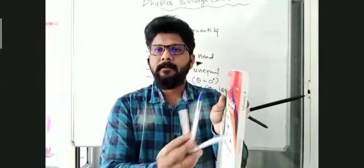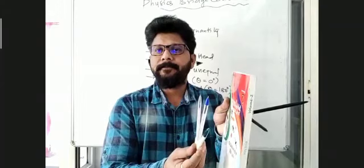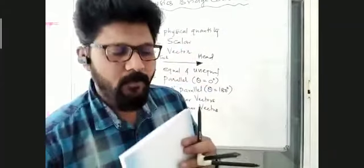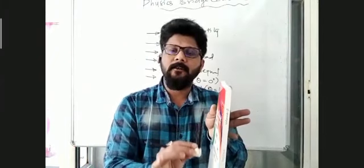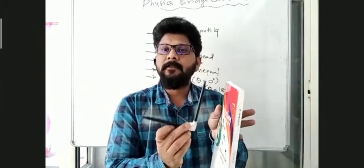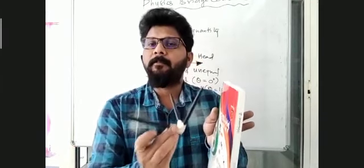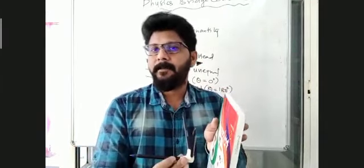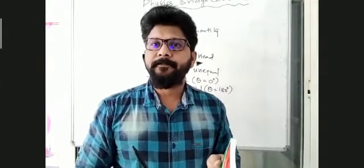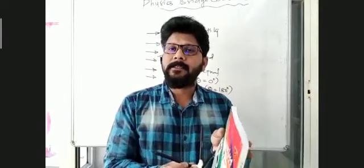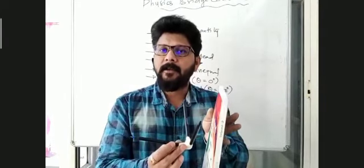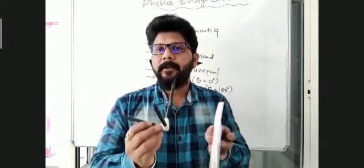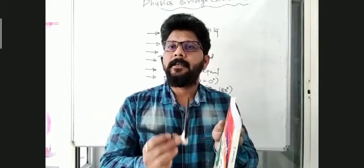3 vectors are in the plane, but here only 2 vectors are in the plane. The mandatory condition is: 2 vectors are always in the plane, but the 3rd vector may or may not be in the same plane. We cannot say that all three vectors are in the same plane. The third vector may or may not be in the plane. In the previous arrangements, the third vector is also in the plane, but here it is not.